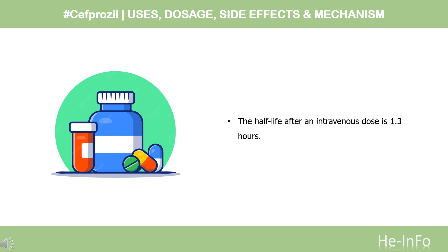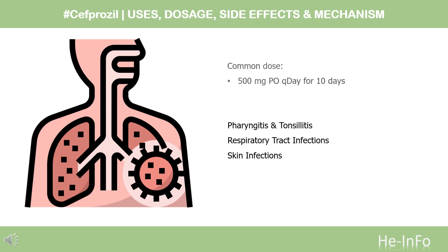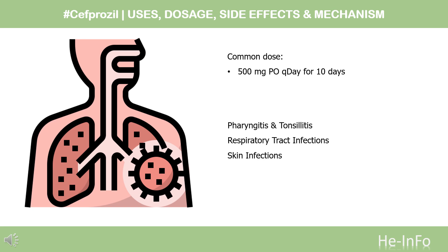Half-life: The half-life after an intravenous dose is 1.3 hours. Dosing varies by indication: for pharyngitis and tonsillitis caused by S. pyogenes, 500 mg PO once daily for 10 days; for respiratory tract infections, 250–500 mg PO every 12 hours for 10 days; for skin infections, 250–500 mg every 12 hours or 500 mg once daily for 10 days.